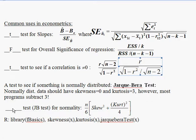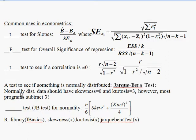Now let's look at the Jarque-Bera test for normality. There are probably more than a dozen tests for normality, but the Jarque-Bera test is nice because it's pretty simple. Normally distributed data should have no skewness, and it should have a kurtosis of three.